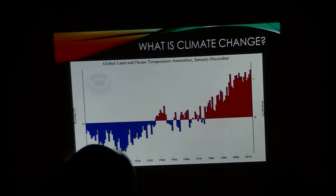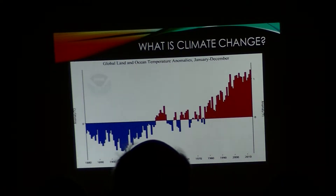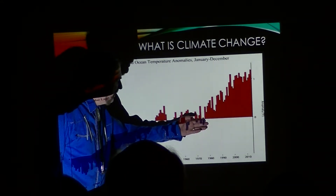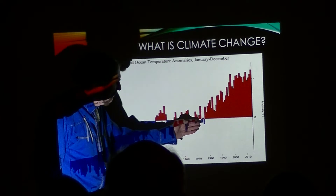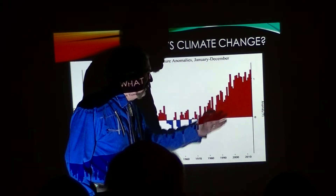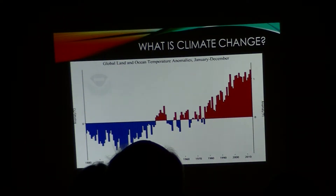Starting around the time of the Second World War, temperatures started popping up again, but they went up, they went down, they went up, they went down until the mid-1970s. You can see that in this area, some temperatures were above average, others were below average. But since the mid-1970s, there have been no years below average and it's been a steady and persistent increase in the average temperature on a global scale.